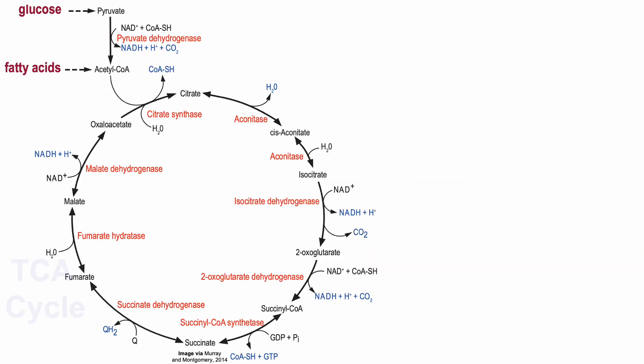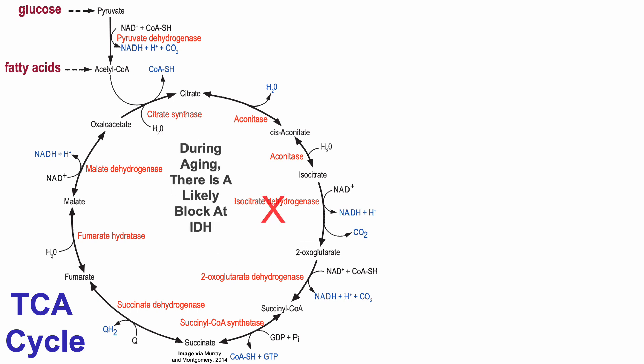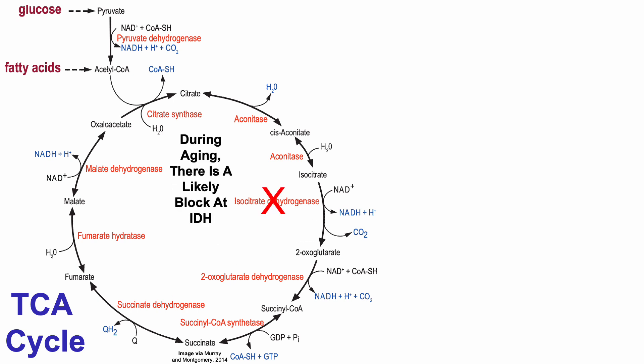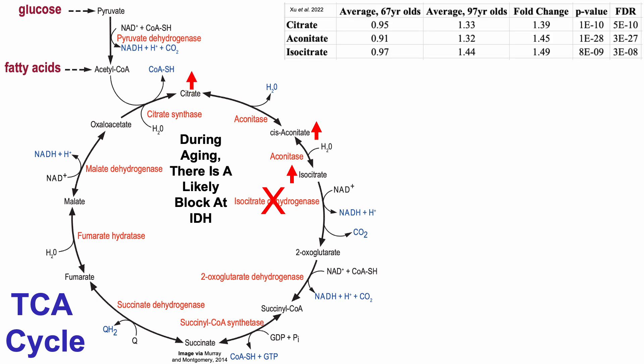Here we can see the citric acid cycle, or TCA cycle. During aging, there is likely a block at isocitrate dehydrogenase, otherwise known as IDH. That's because metabolites that are upstream of IDH — including isocitrate, cis-aconitate, and citrate — increase during aging.